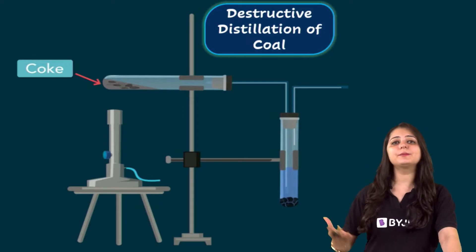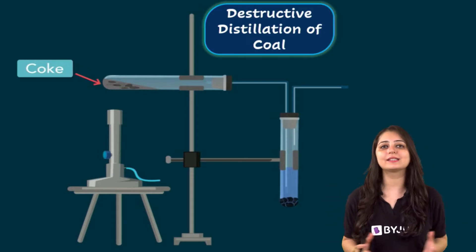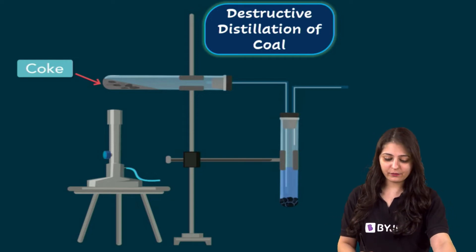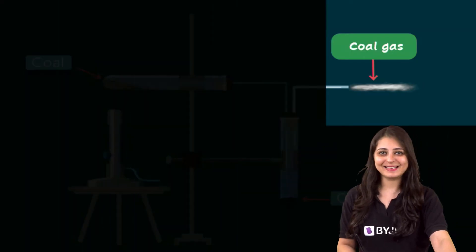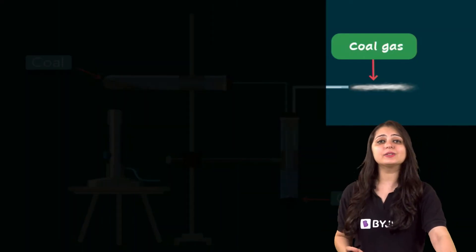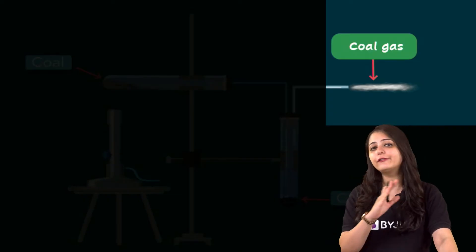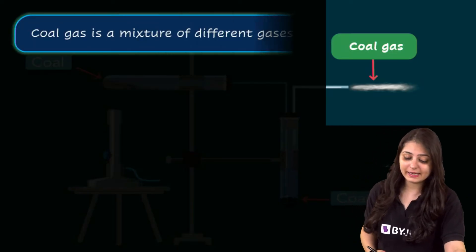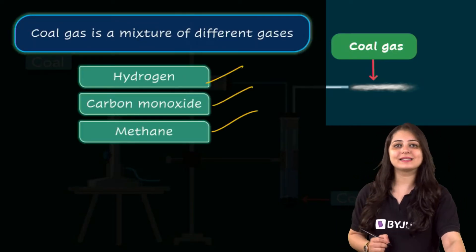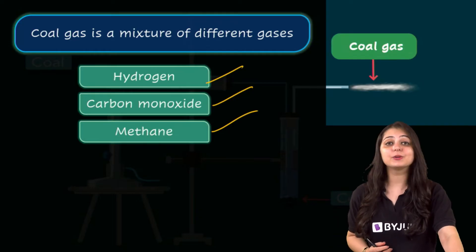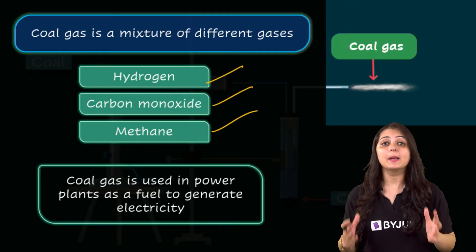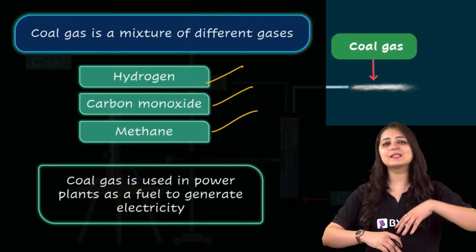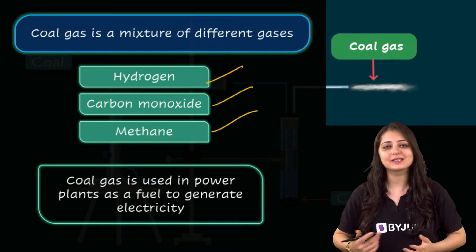Let's understand these three products that we get from coal by destructive distillation. Starting with the first one — coal gas. Coal gas is also known as town gas and it's a mixture of different gases like hydrogen, methane and carbon monoxide. These gases are actually combustible, making coal gas an excellent fuel with high calorific value. It gives out a lot of energy when burned.